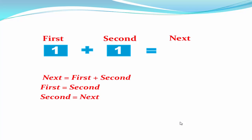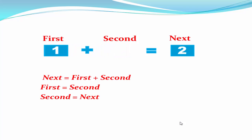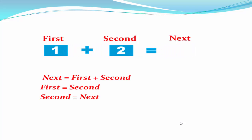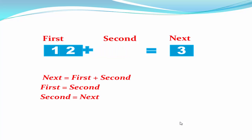Now we add these two numbers to get the next number, and the result is 2. Again we shift second to first and next to second, then add these two numbers. This procedure continues to get each next number in the series.